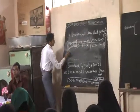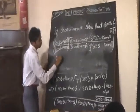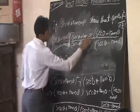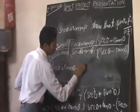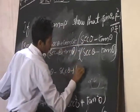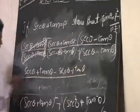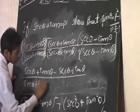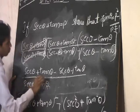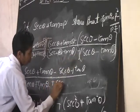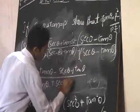Sec theta plus tan theta cancels. Open the bracket. Sec theta plus tan theta. Minus into plus is minus sec theta. Minus into minus is plus tan theta. Denominator: sec theta plus tan theta. Plus into plus is plus sec theta. Plus into minus is minus tan theta.